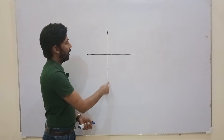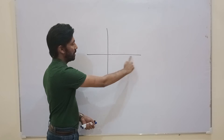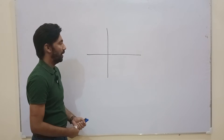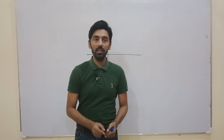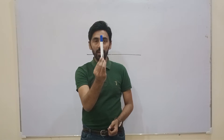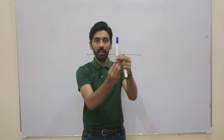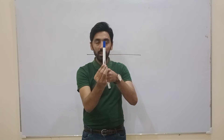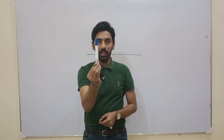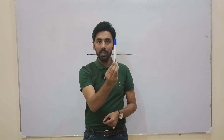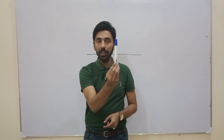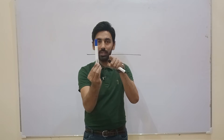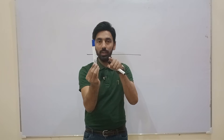Now we will make different examples of the optical cross in retinoscopy. As you can see, this is the optical cross — this is the vertical meridian at 90 degrees and this is the horizontal meridian at 180 degrees. One important thing to remember: if the streak is at 90 degrees, we will move the streak in a horizontal fashion.